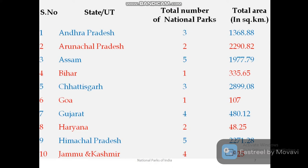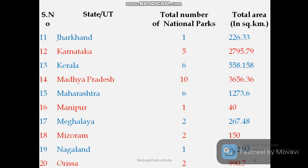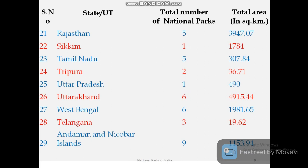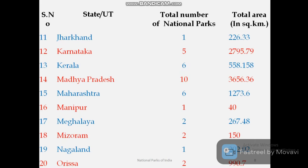Here is the state-wise data of national parks. Among the 104 national parks: Andhra Pradesh — 3, Arunachal Pradesh — 2, Assam — 5, Bihar — 1, Chhattisgarh — 3, Goa — 1, Gujarat — 4, Haryana — 2, Himachal Pradesh — 5, Jammu and Kashmir — 4, Jharkhand — 1, Karnataka — 5, Kerala — 6, Madhya Pradesh — 10, Maharashtra — 6, Manipur — 1, Meghalaya — 2, Mizoram — 2, Nagaland — 1, Odisha — 2, Rajasthan — 5, Sikkim — 1, Tamil Nadu — 5, Tripura — 2, Uttar Pradesh — 1, Uttarakhand — 6, West Bengal — 6, Telangana — 3, Andaman and Nicobar — 9.